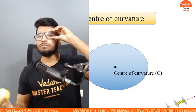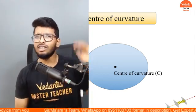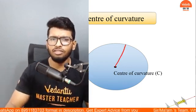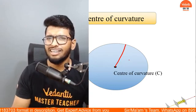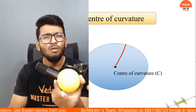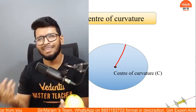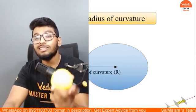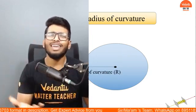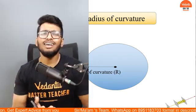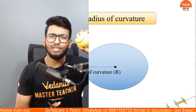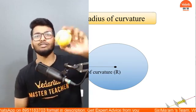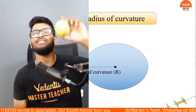A circle also has something called a radius — the distance from the center to the circumference. If it's a three-dimensional circle, it will also have a radius. And hence you have the next component known as the radius of curvature. Center of the circle is just called center; center of the sphere is called center of curvature. Radius of a circle is called radius; radius of a sphere is called radius of curvature. As simple as that.